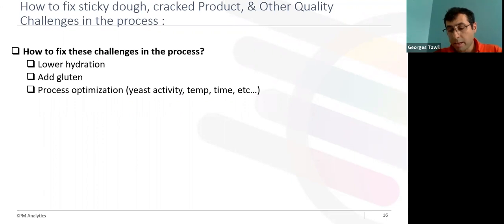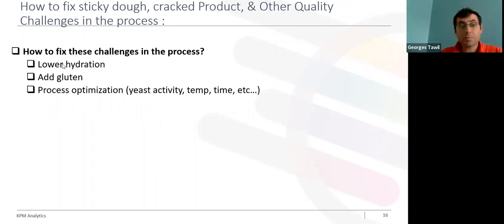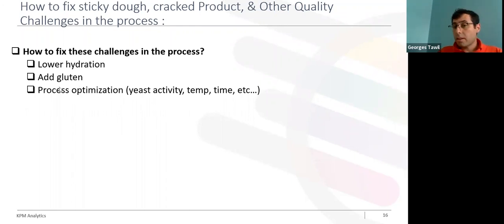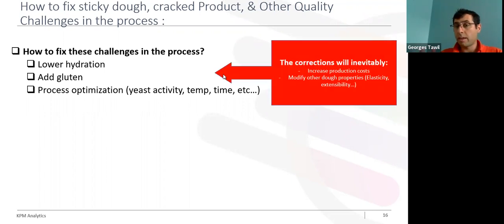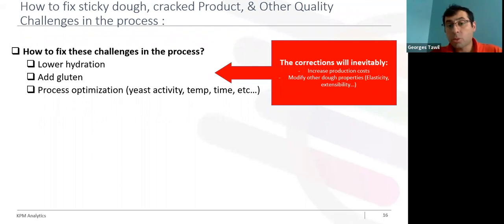What are the possibilities for the baking industry to fix sticky dough, cracked product, and inconsistent color, shape, and size? The industry has quite a few options. To correct a sticky dough, it's possible to decrease the hydration of the dough or add more gluten, making the dough less sticky. Regarding appearance and color, it's possible to make adjustments by fine-tuning process parameters like yeast activity, temperature, time, and many other parameters. However, whatever the adjustment, these changes will increase production cost and also modify the dough's properties in terms of extensibility and elasticity.